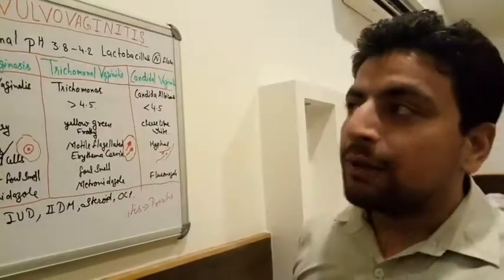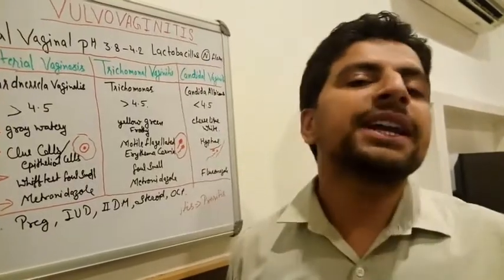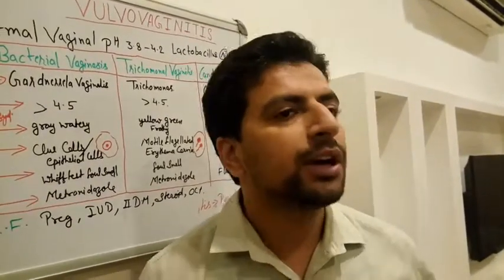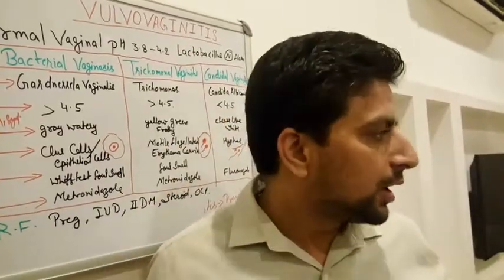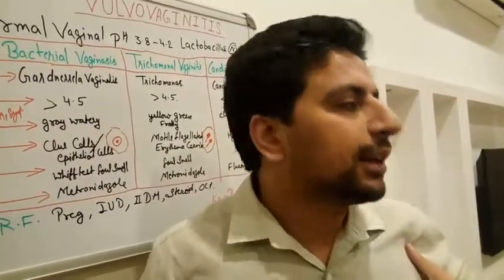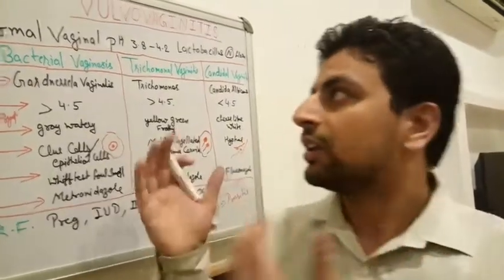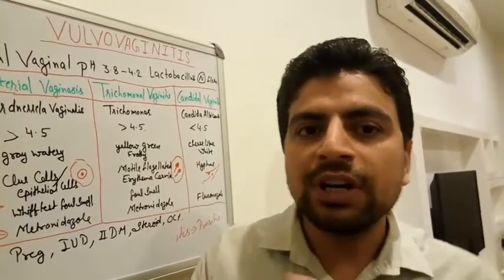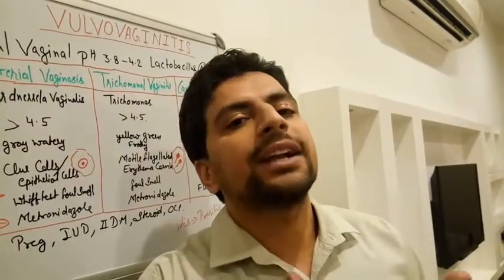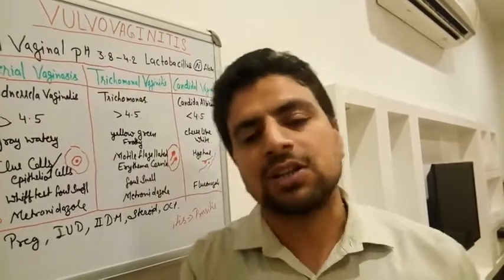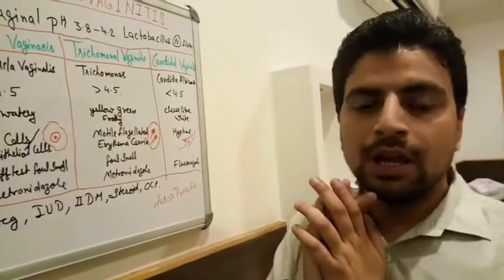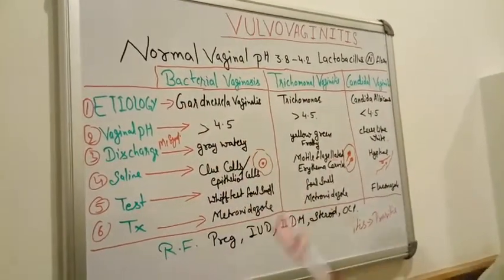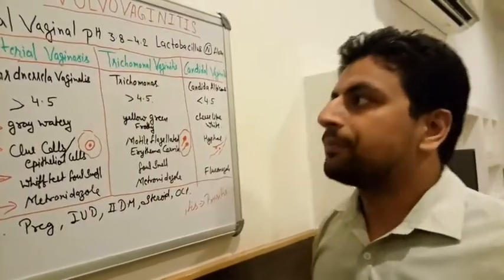Just as in the respiratory tract there are upper respiratory infections — like nose and throat — and lower respiratory infections like the lung, in gynecology similarly there is PID, which is upper genital tract infection, and vulvovaginitis, which is a lower genital infection. In my coming video we will study PID as an ascending infection.